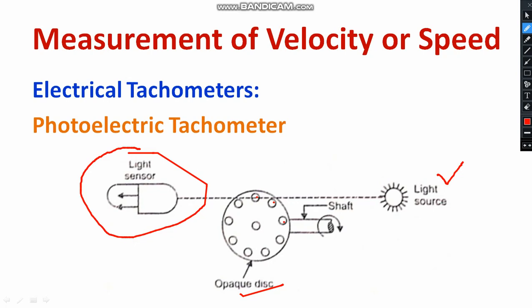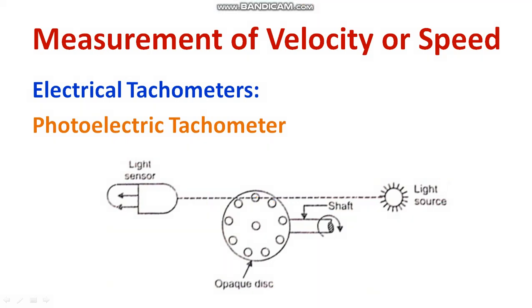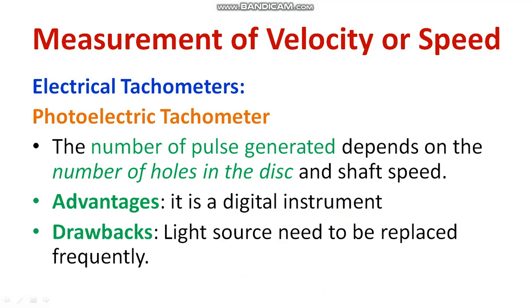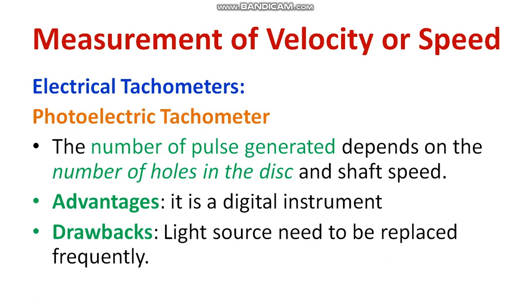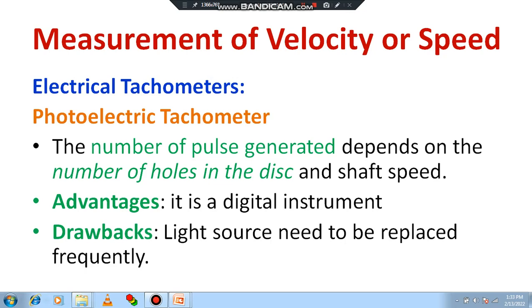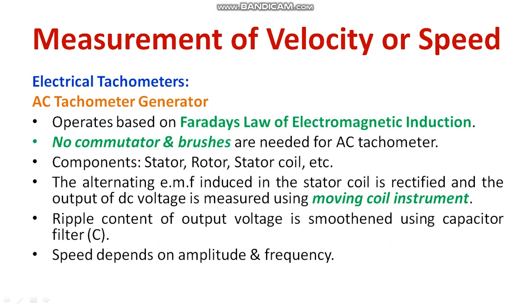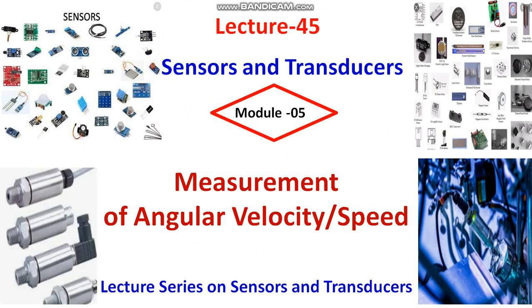This is the way the photoelectric tachometer works. It is a digital instrument, but a light source is required. This covers the electrical tachometers discussed in this video. One more topic remains — the eddy-current tachometer — which I will be explaining in the next session. In this video, I discussed electrical tachometers for the measurement of angular speed or angular velocity. I request you to share the video with those who are looking for this content.